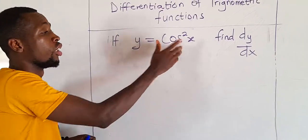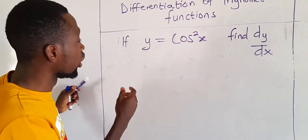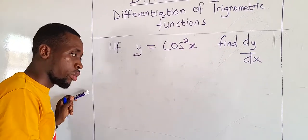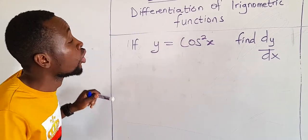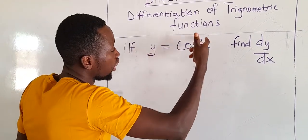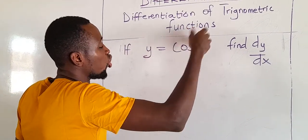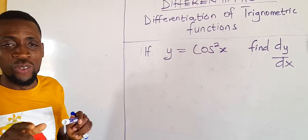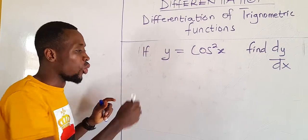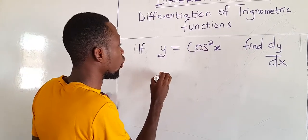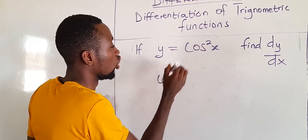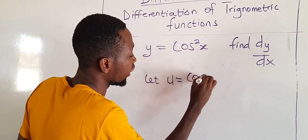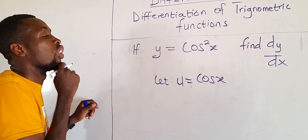So we have our first question here. If y is equal to cos squared x, find dy/dx. Any time we are differentiating with a function raised to an exponent, we use chain rule. So we will let u be equal to the base. What is the base here? The base here is cos x, so we let u equal to that.